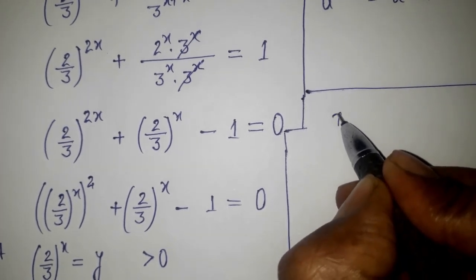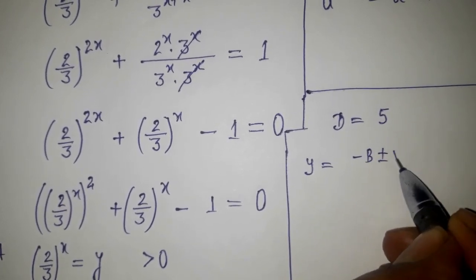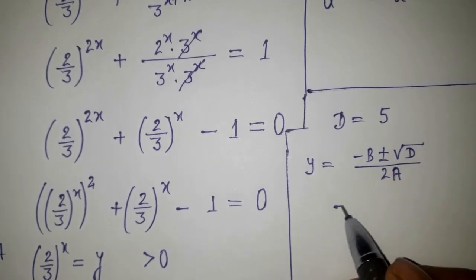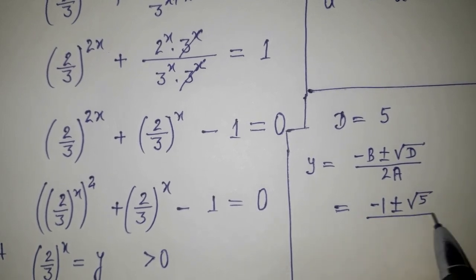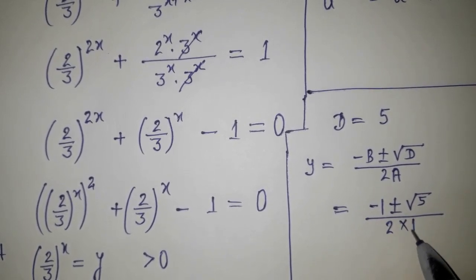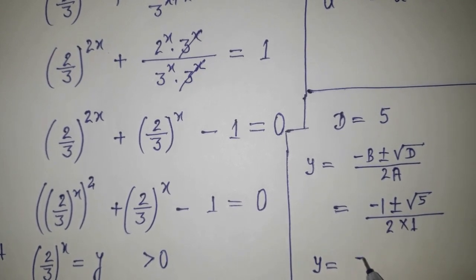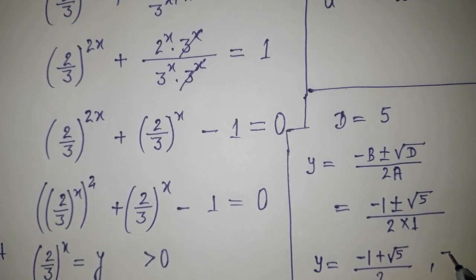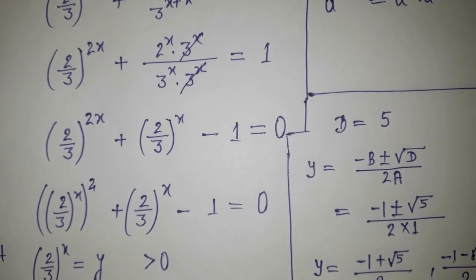D is coming as 5. So applying the quadratic formula: y equals minus b plus or minus root under D divided by 2a. Putting in the values: y equals minus 1 plus or minus root 5, divided by 2. So we get two values: y equals (minus 1 plus root 5) divided by 2, and y equals (minus 1 minus root 5) divided by 2.